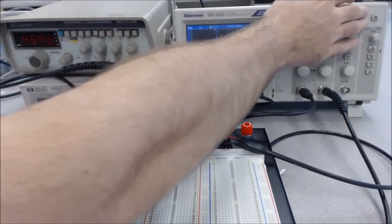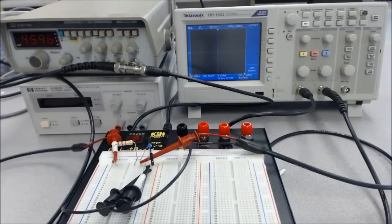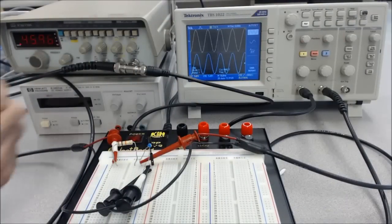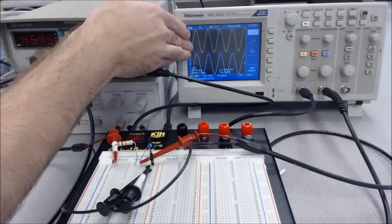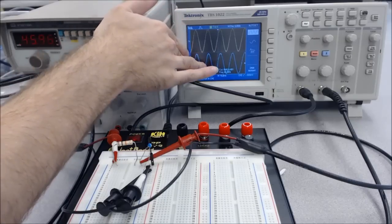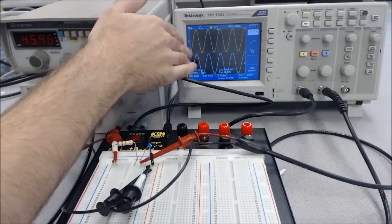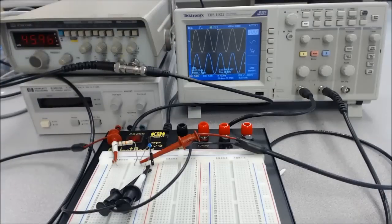In a second, we see two waves appear. The first one is channel one, that's yellow up top there, and that's the input to the filter. The bottom is channel two, or the output of the filter.